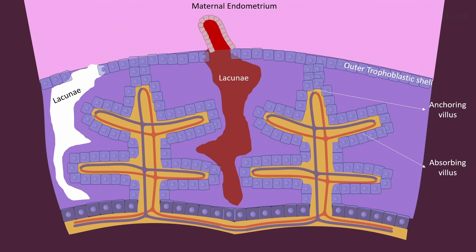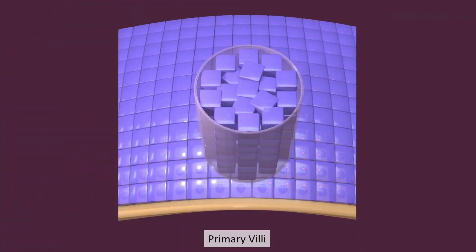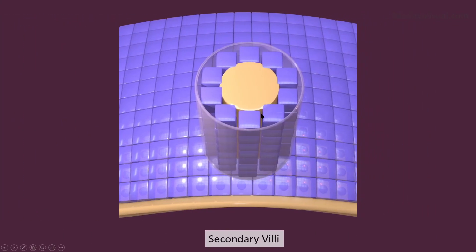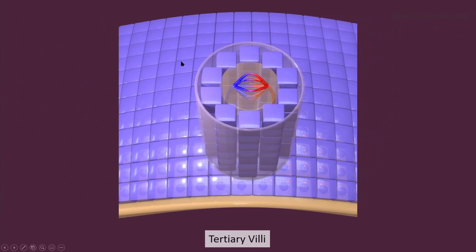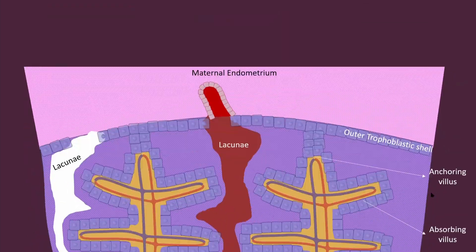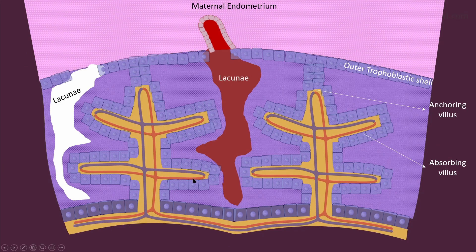Let's review what we have covered. Primary villi are a solid cord of cytotrophoblast. Secondary villi consist of an extension of mesenchyme from extra-embryonic mesoderm into that cord. The final stage is the formation of vasculature inside this mesenchymal extension from extra-embryonic mesoderm, giving tertiary villi. At the end of the second week we have primary villi; then during the third week development proceeds to tertiary villi, which are branched and consist of both anchoring villi and absorbing villi. Thank you so much for watching this video.